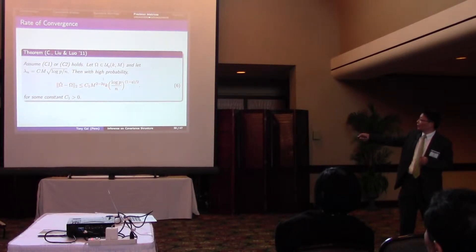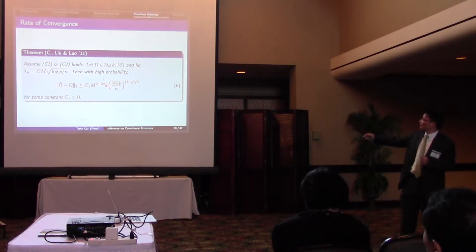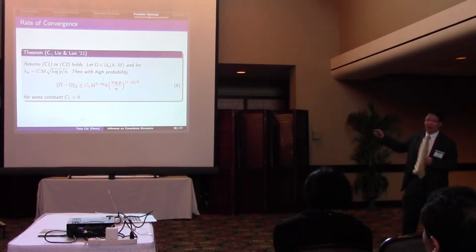satisfies this bound. So with high probability, the difference between the estimate and the truth under the spectral norm is bounded above by this M to the power of 2 minus 2q times K is a sparsity parameter, and log P over N to this power.